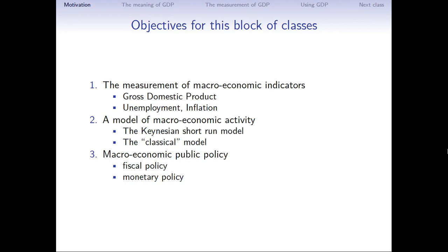In these next four lectures, we're going to spend two of them discussing measurement issues — how to measure the aggregate economy and some important indicators associated with its state, whether it is up or down, moving forward or backward. We'll talk about gross domestic product: its meaning, its measurement, its use. And in the next lecture, we'll talk about two other important indicators: unemployment and inflation.